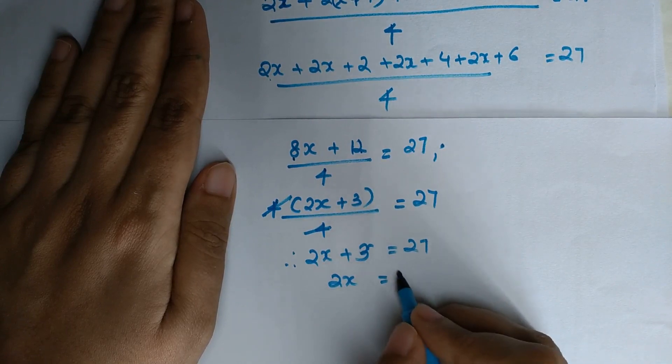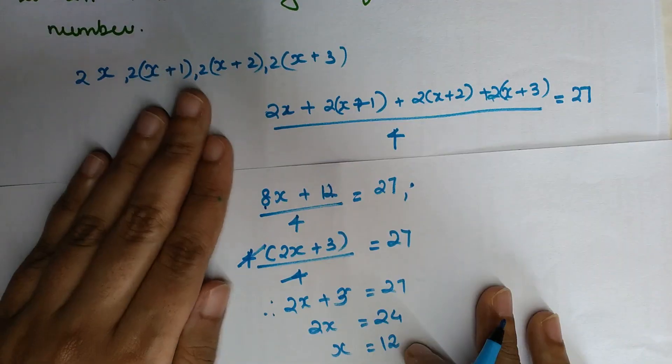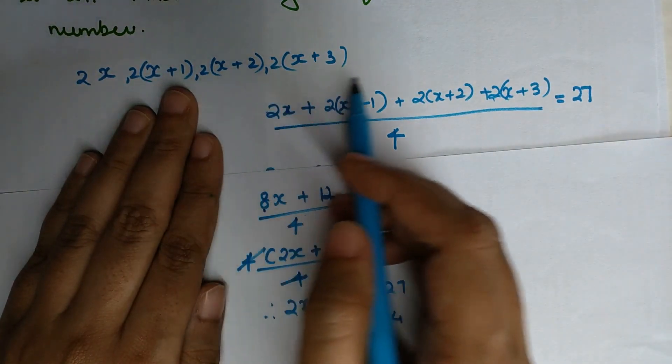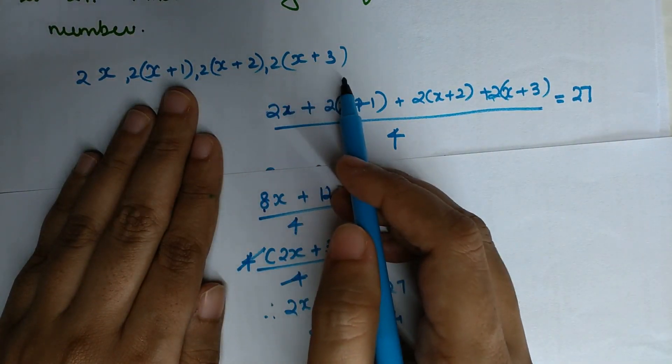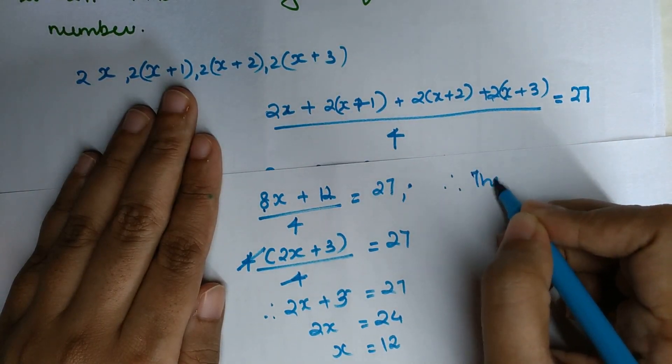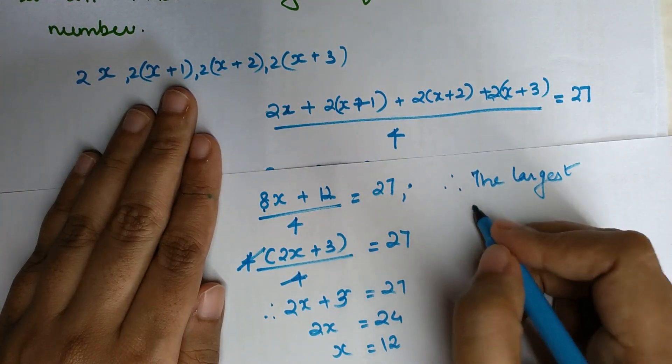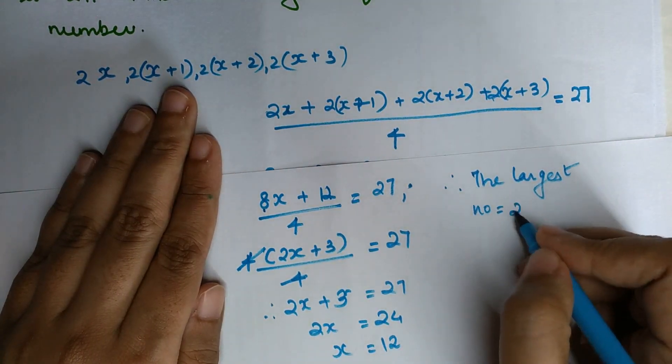Now students, as we can see, the biggest number is 2(x+3). Therefore, the largest number equals 2(x+3), which is 2(12+3)...